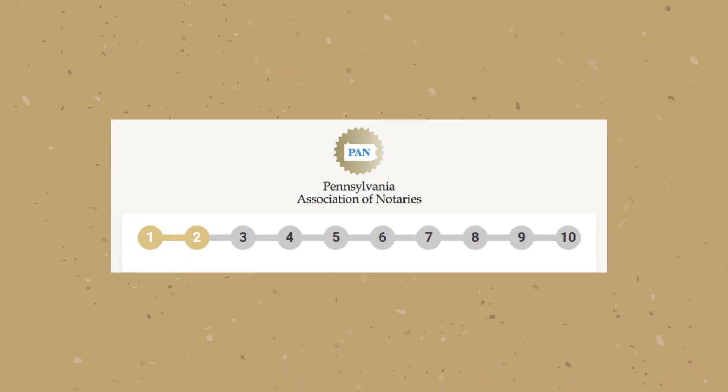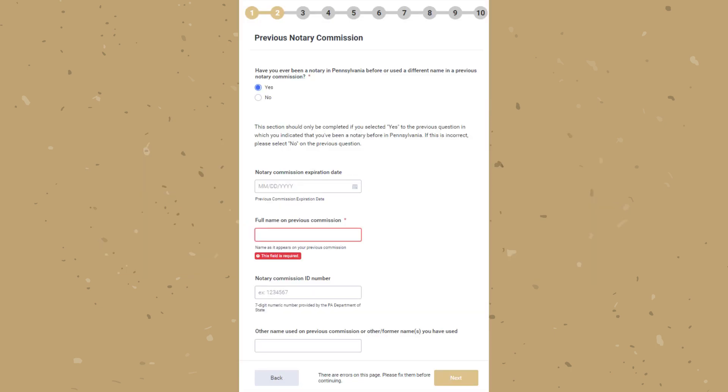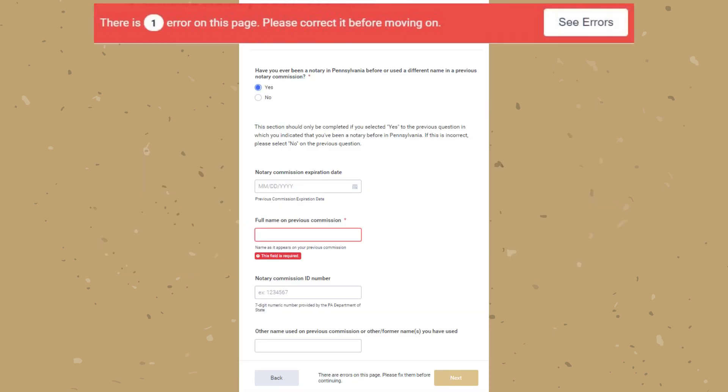As you are filling out the application you will notice at the top of the screen a numbering system. Those numbers are page indicators. If you need to go back to a specific page just click the page number. If you leave a question or section blank that is required, an error message will pop up at the top of the screen notifying you which sections need to be completed before moving on.